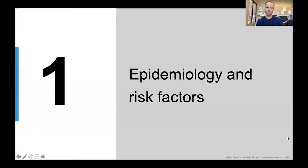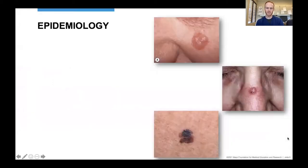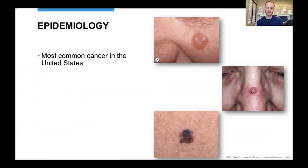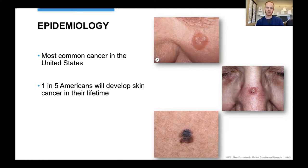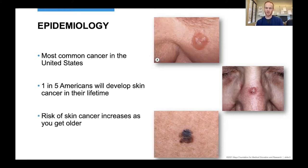First, the epidemiology and risk factors of skin cancer. Skin cancer is by far the most common type of cancer in the United States. Some studies estimate that one in five, or 20% of Americans, will at some point in their life develop a skin cancer. And as we age, as we get more birthdays under our belt, the risk of skin cancer increases along that continuum.